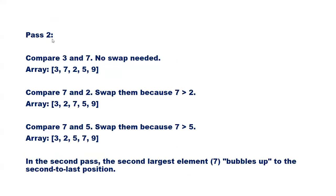Now go to pass number 2. We again start from the beginning. Compare 3 and 7 — no swap needed. Compare 7 and 2 — swap them because 7 is greater than 2. Array becomes [3, 2, 7, 5, 9]. Compare 7 and 5 — swap them because 7 is greater than 5. Array becomes [3, 2, 5, 7, 9]. In the second pass, the second largest element 7 bubbles up to the second-to-last position. Now 7 and 9 are in the correct order.